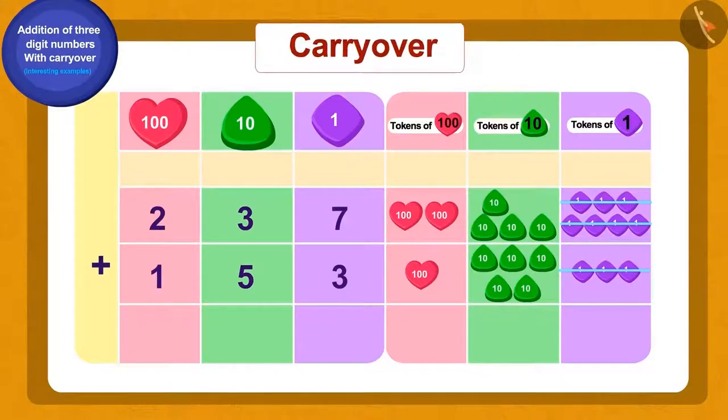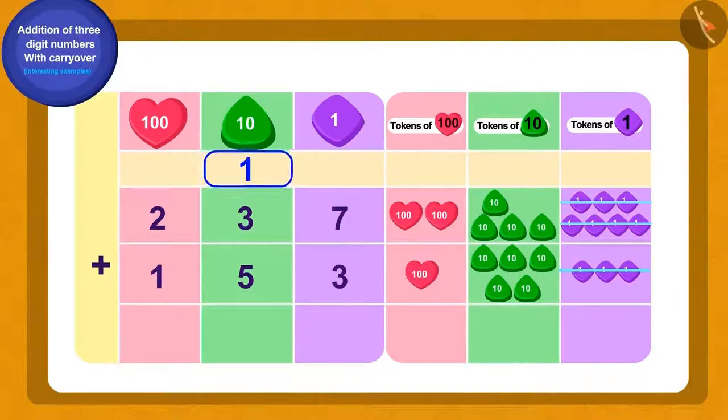And using the carryover process, we will show it by writing a 1 in the 10s digit place. Now, we do not have any 1s token left. So, how do we write it now? We will write a 0 for this.